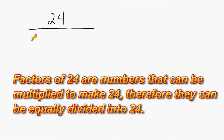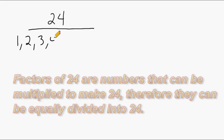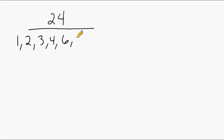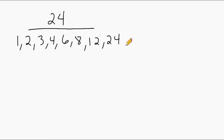The factors of 24 are 1, 2, 3, 4, 6, 8, 12, and 24. Now all of these numbers can be divided equally into 24 with no remainder. So that is what makes these numbers all factors of 24.